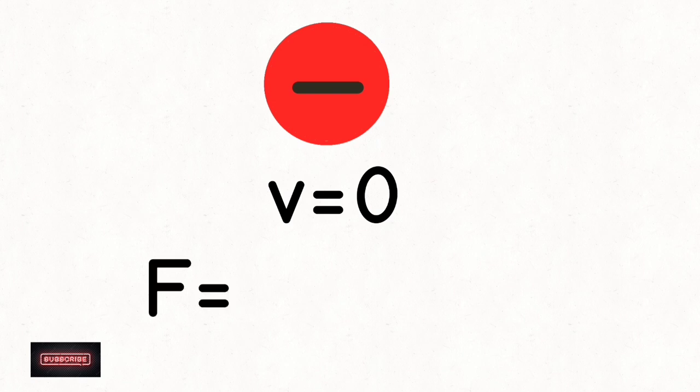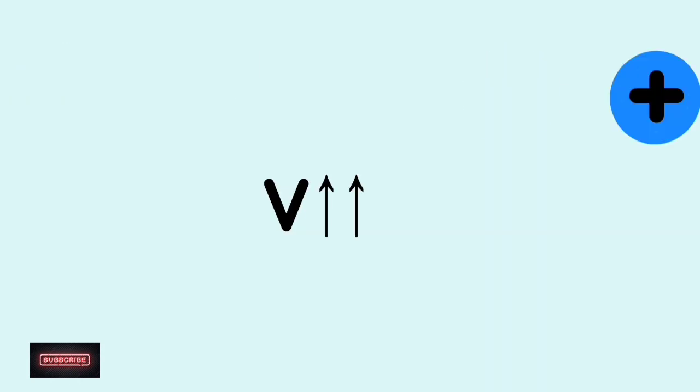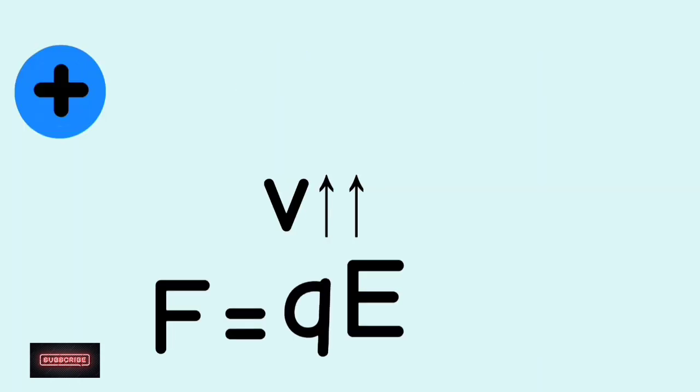When a particle isn't moving, that means its velocity is zero, so V is zero. That means only the electric force will act on non-moving charged particles. But as particles start to move, their velocity starts to increase and magnetic force starts to play its role. Also, for particles moving with very high velocity, the magnetic force is much stronger than the electric force.